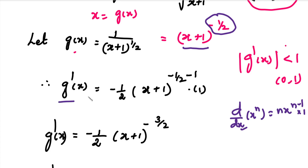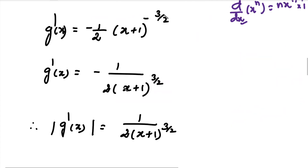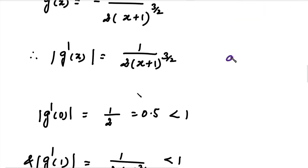So g'(x) equals minus 1 by 2 into (x+1) to the power minus 3 by 2. When the power is negative, we move it to the denominator, giving 1 divided by (x+1) to the power 3 by 2. Taking the modulus, the negative value becomes positive: |g'(x)| = 1 divided by 2(x+1)^(3/2).